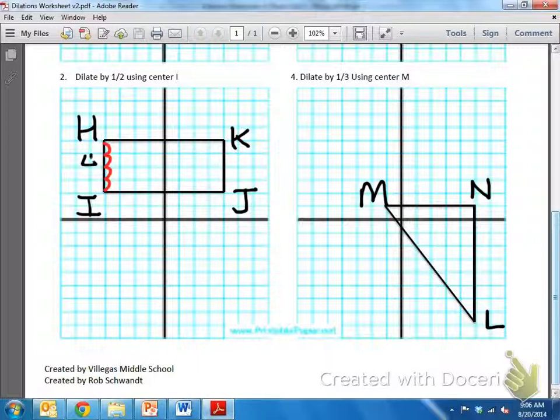Looks like I'm counting. There's four there from H-I, and then H-K has eight units. So, four by eight. Now, let's take a look here. It says dilate by one half.